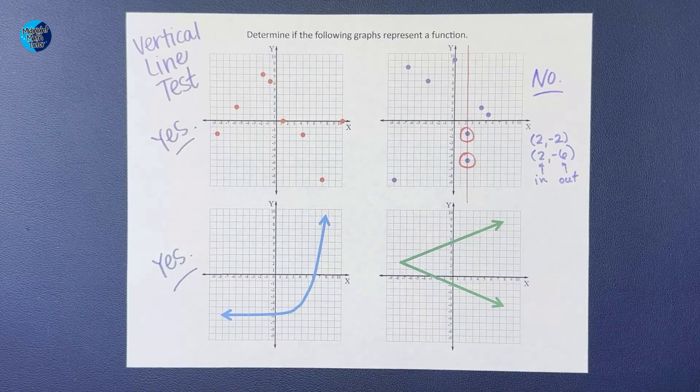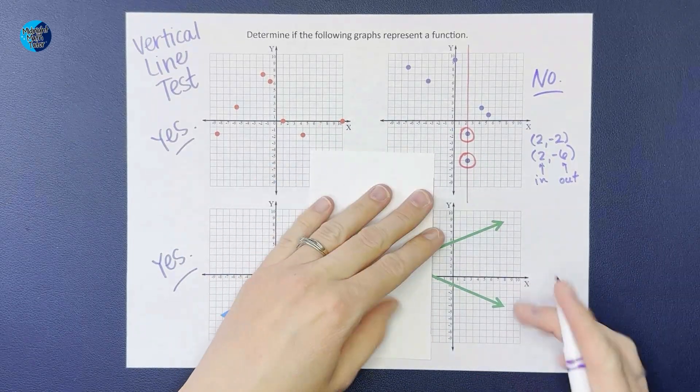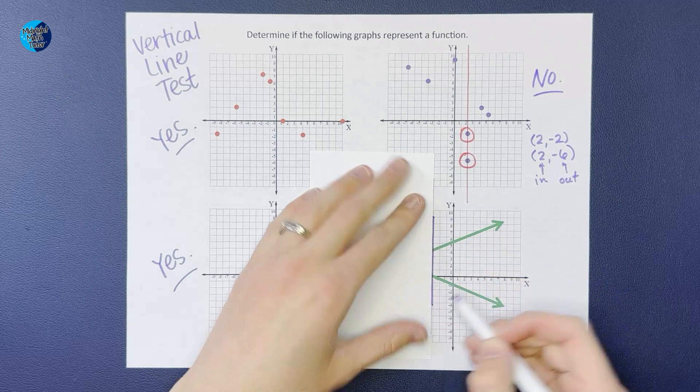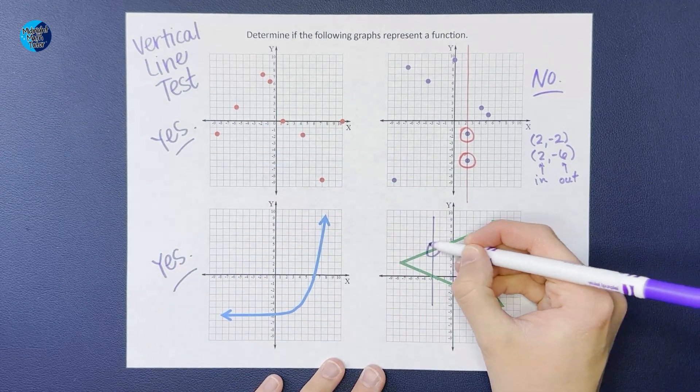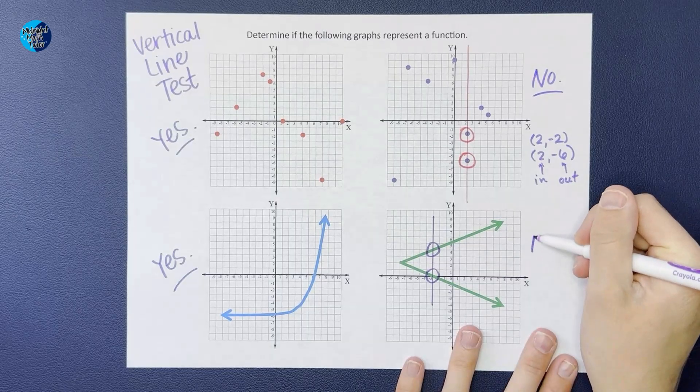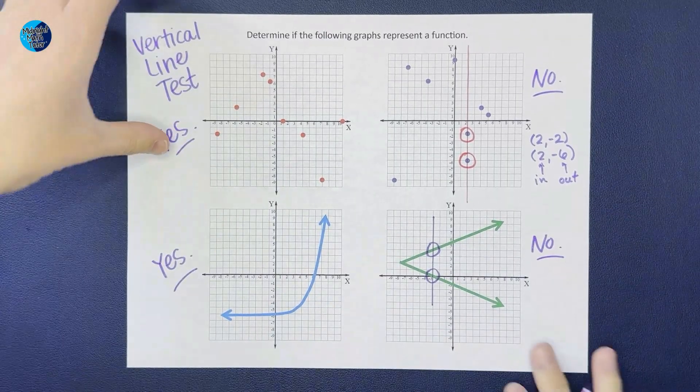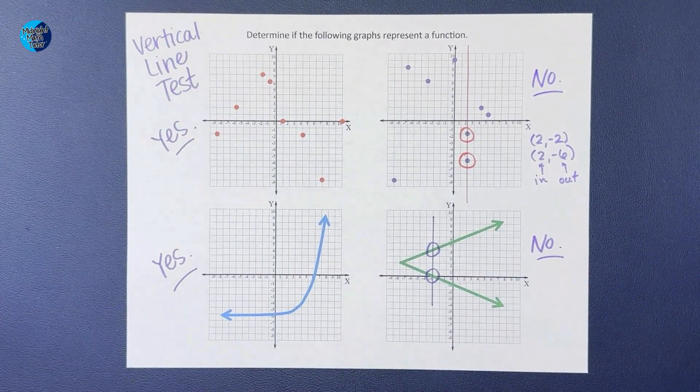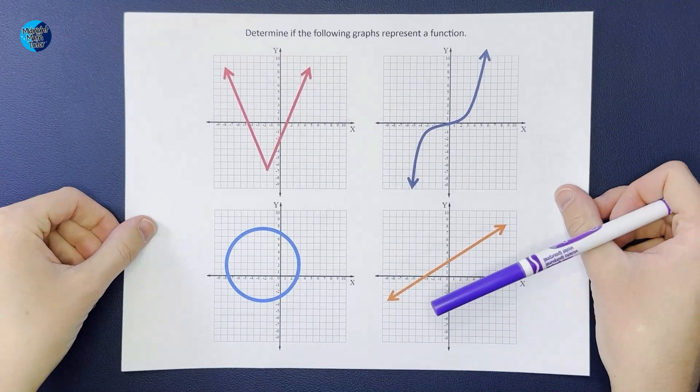This one you can probably already tell - oh nope. If I were to draw my vertical line, you'll see that it crosses at two different points. So no, this one is not a function.